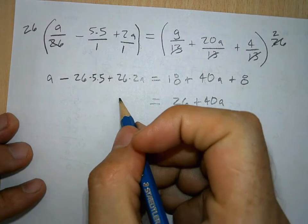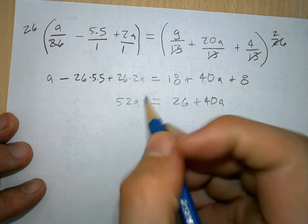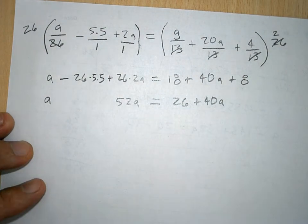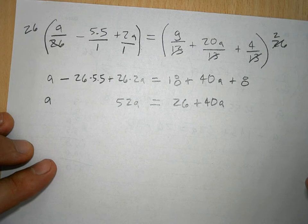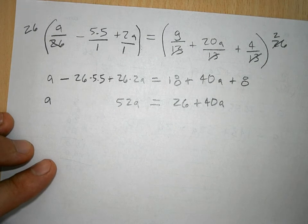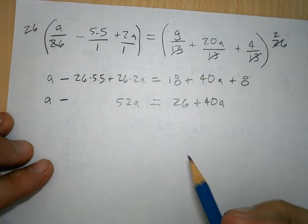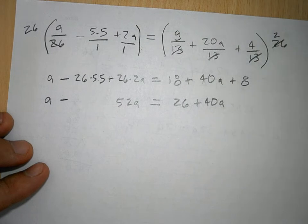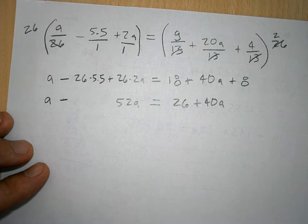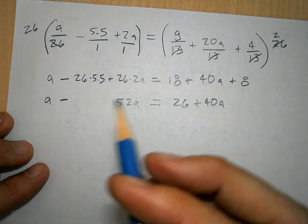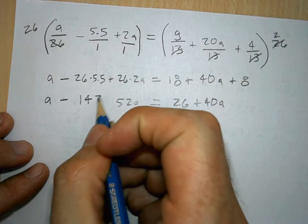And 26 times 2A is 52A. I'm going to cheat and use a calculator here. Do you have a calculator there? Why don't you punch in 26 times 5.5? So, up until now, everything we've done has been balancing the equation. We have just times 26 here, and done the same thing over here and combined like terms. 26 times 5.5? 143. That's right. My man.